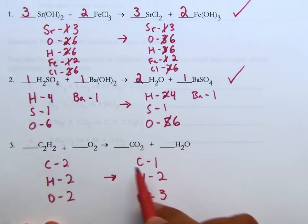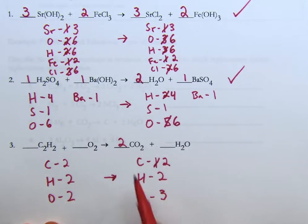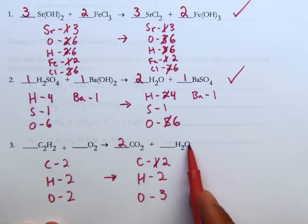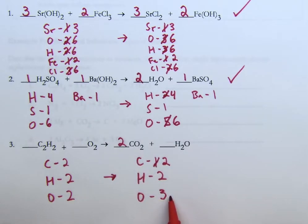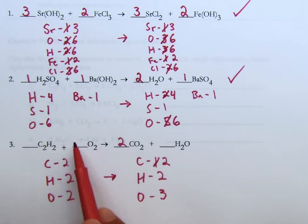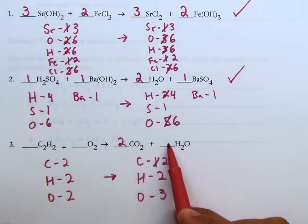If there are two carbons on the left, we need two carbons on the right, so I'll put a 2 in front of CO2. But now that gives me four oxygens plus one more, which is five — an odd number. Here's the key tip: because O2 has a subscript of two, no matter what I put in front of it I'll always have an even number of oxygens. So this equation will never balance unless I have an even number of oxygens on the right side. That means I need an even coefficient in front of C2H2, so I'll erase and go bigger.